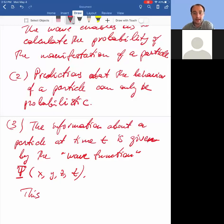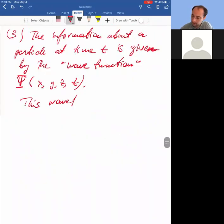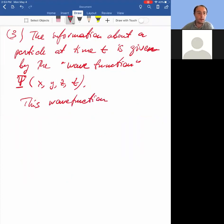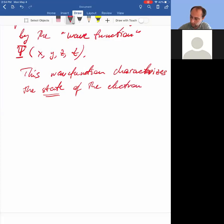This is a Greek letter psi, wave function. And I say this wave function will in general be complex. If you evaluate the wave function at a given point in space xyz at a given time, it will not give you a number, it will give you a complex number.